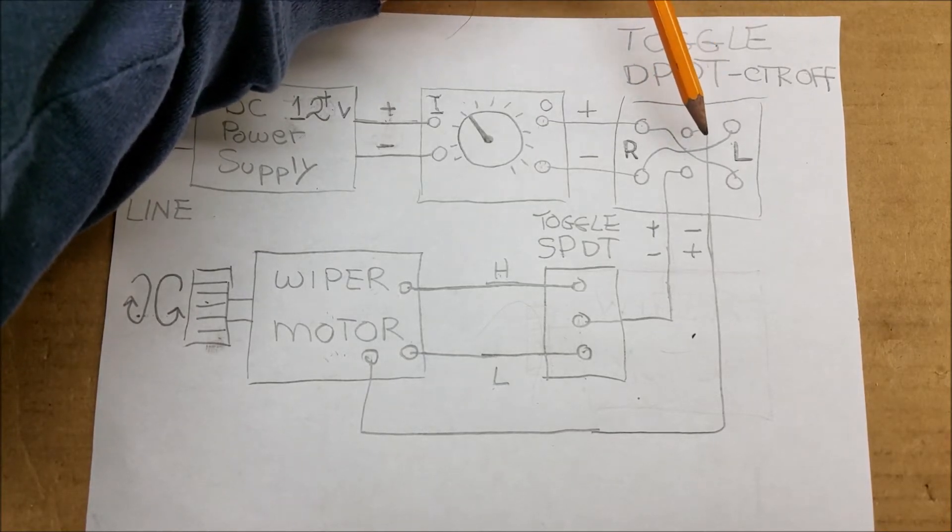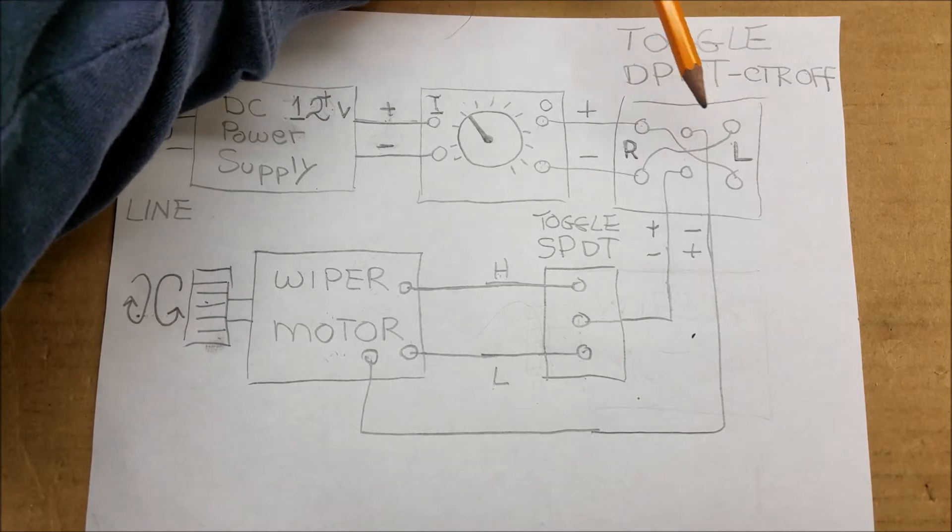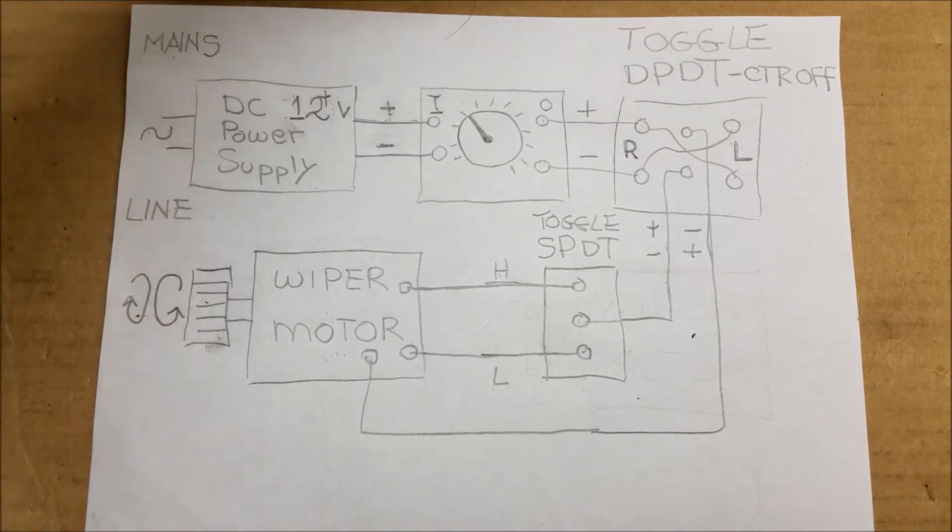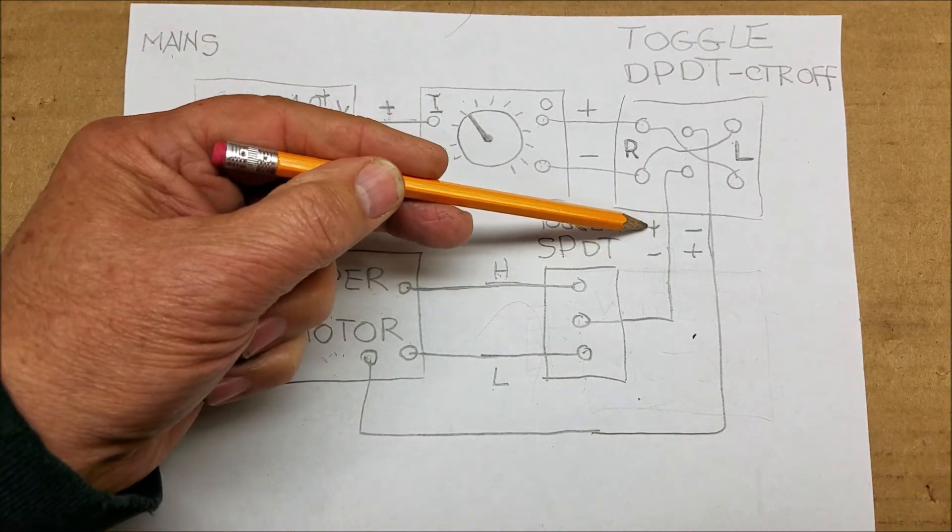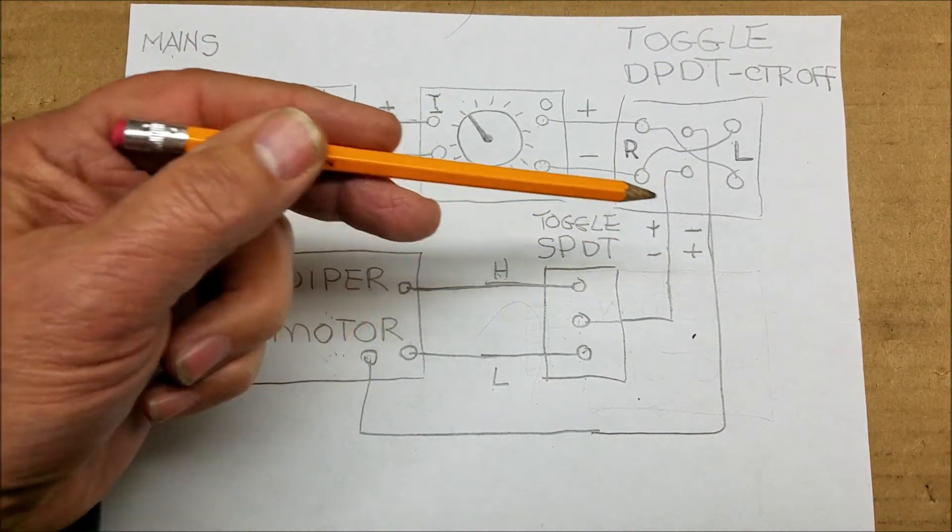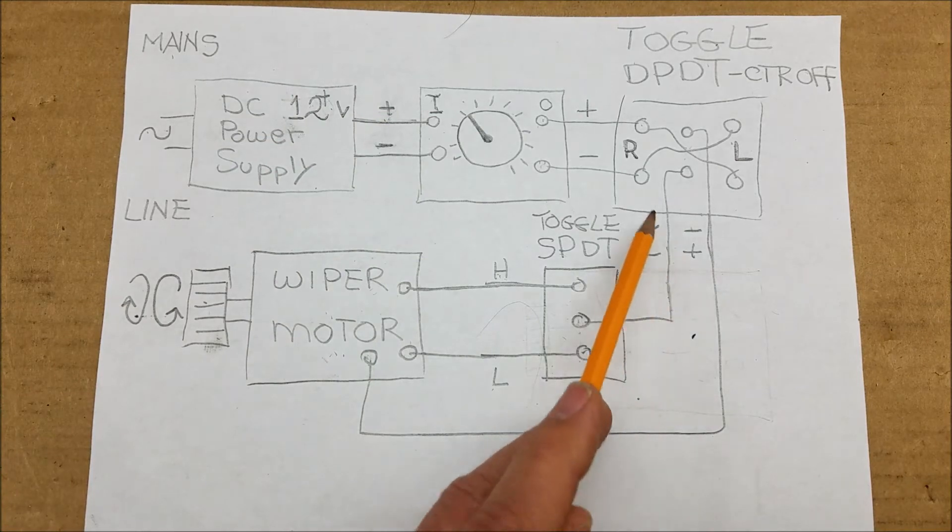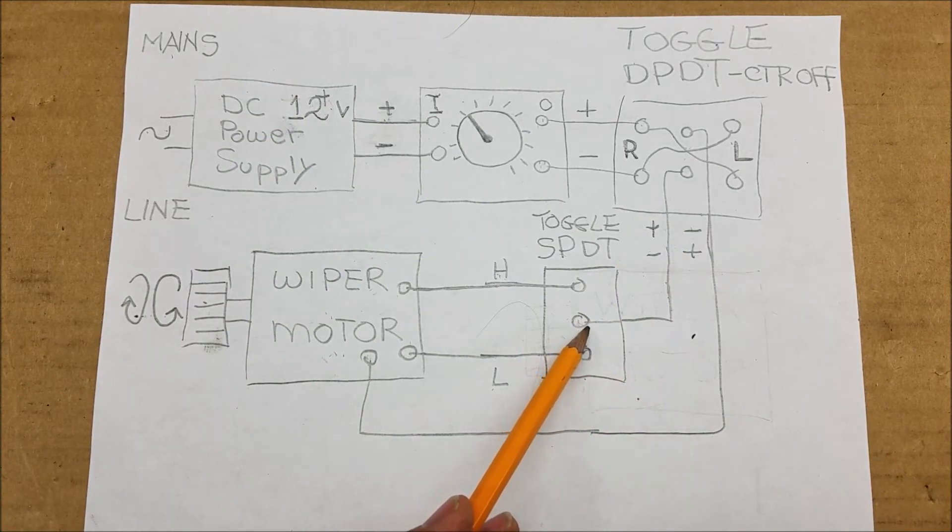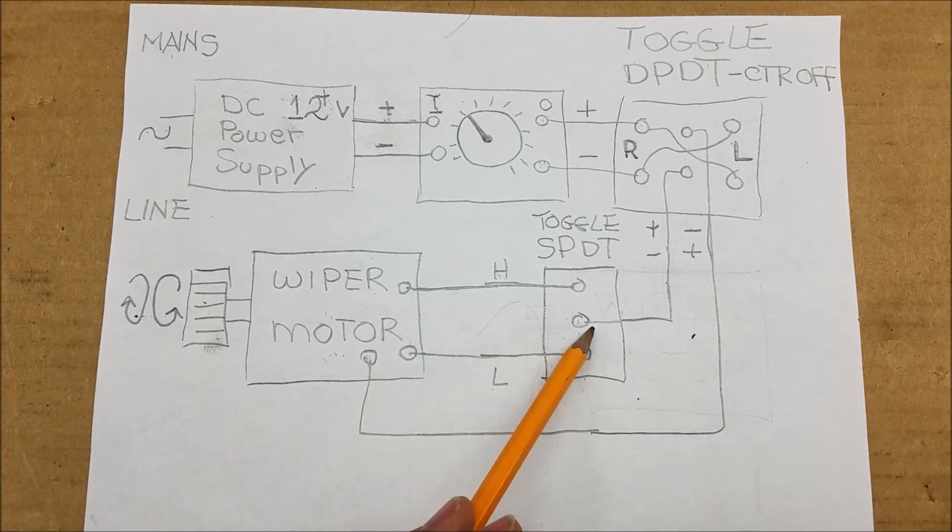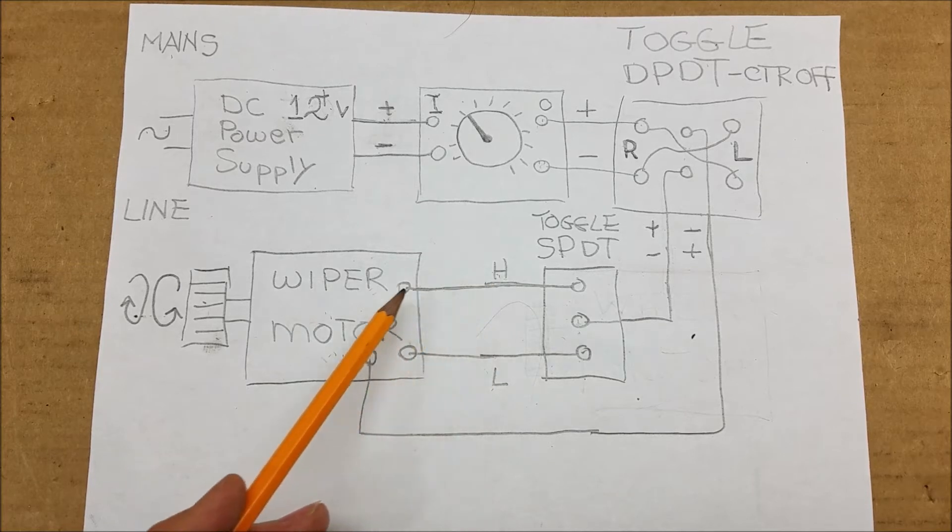It is output here. This is a double pole double throw center-off toggle switch, center-off meaning the control rod can stay vertical and it's not connecting anything. Then you have the left and right position which basically reverses the polarity of the output, plus and minus or minus and plus. It then comes down through here to a single pole single throw toggle switch.